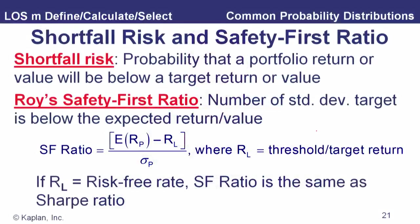For this last piece about common probability distributions, we're going to start with a couple of terms: shortfall risk, and then we're going to look at the safety first ratio or Roy's safety first ratio. Shortfall risk is simply the probability that a portfolio return or a portfolio value will be below some target return or target value. So here's the portfolio — the target return is 5%. What's the probability of a return less than 5%? That's the shortfall risk.